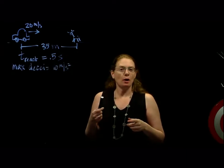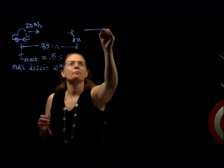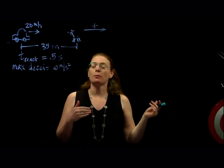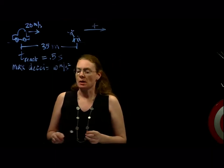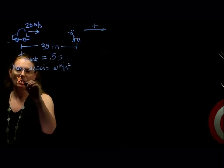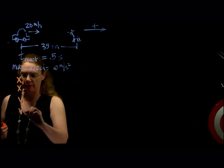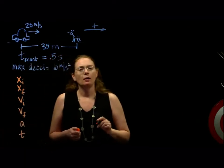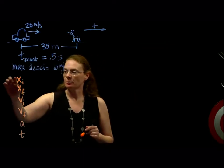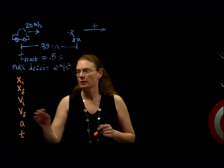I'm going to draw a coordinate system — it's a one-dimensional problem, so I'll use one dimension. To the right I'm going to say is positive. Next up, we write down what we know and what we're looking for. Here is our chart of variables, and for most of these kinematics problems we're going to use six variables: initial position, final position, initial velocity, final velocity, acceleration, and time.